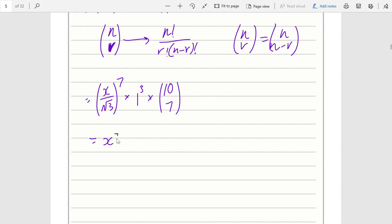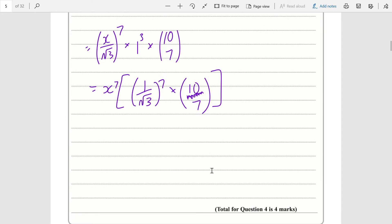You'd get x to the power of 7 multiplied by 1 over root 3 to the 7, times 1 to the power of 3, which is just 1, times 10 choose 7. This would be x to the power of 7 multiplied by 1 over root 3 to the power of 7, which is 1 over 3 to the power of 3 and a half. That would be 3 cubed times root 3 on the denominator, so 27 times root 3, and it's 1 over this.